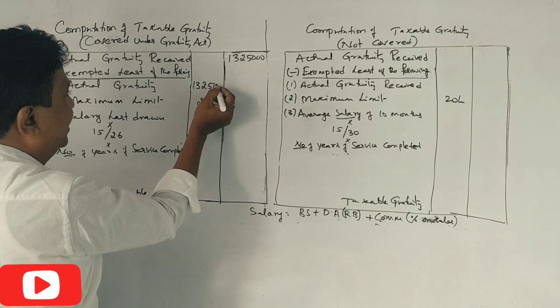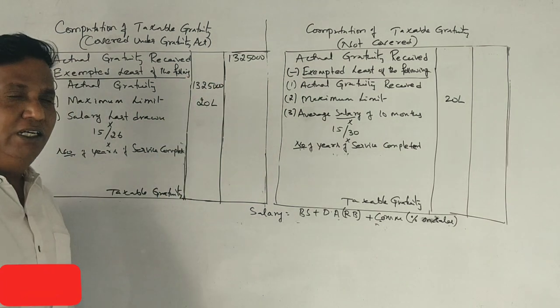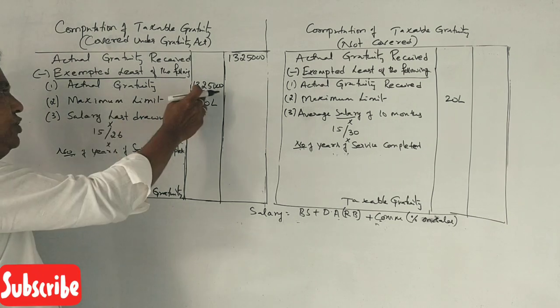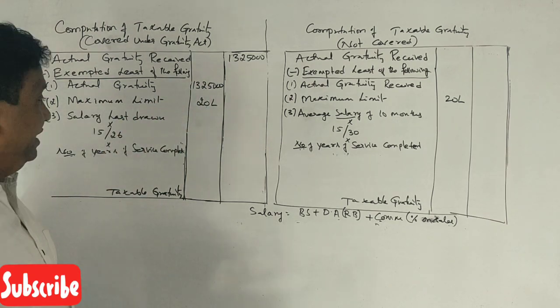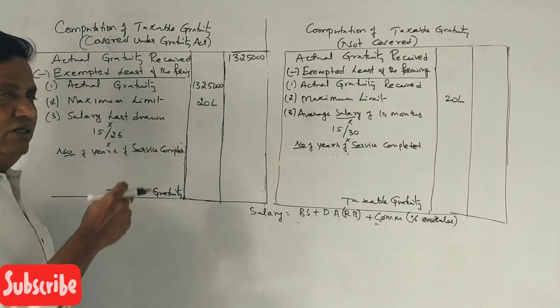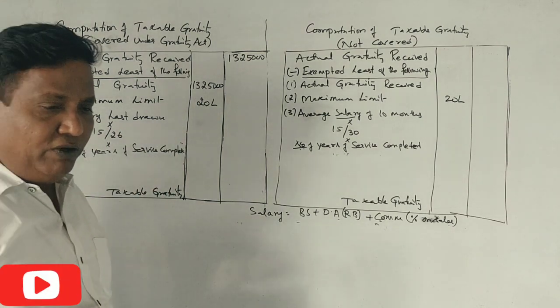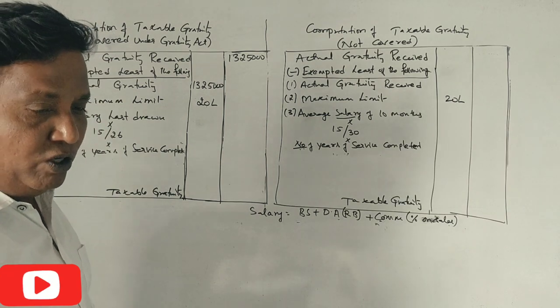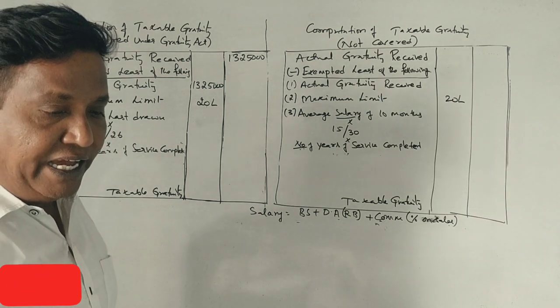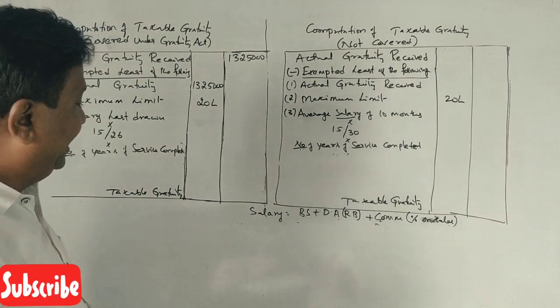First, covered. Now, the actual gratuity is 13,25,000, maximum limit is 20 lakhs. And salary, last drawn, basic salary at retirement time of monthly salary. So your monthly salary, basic salary is 32,000.